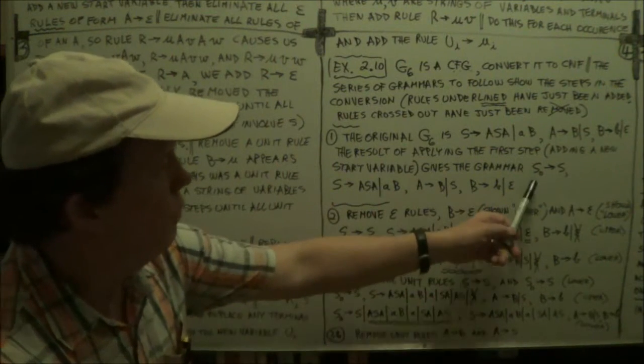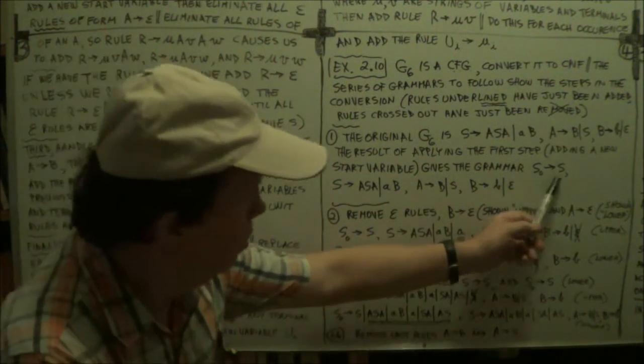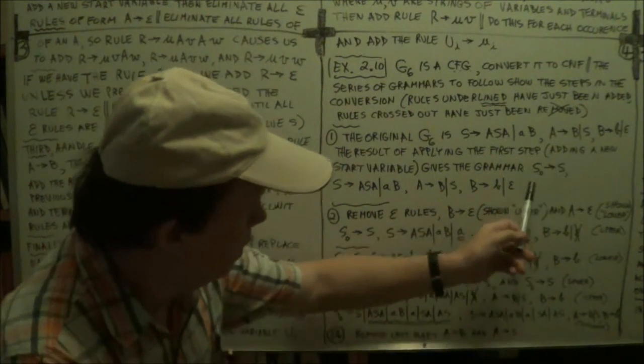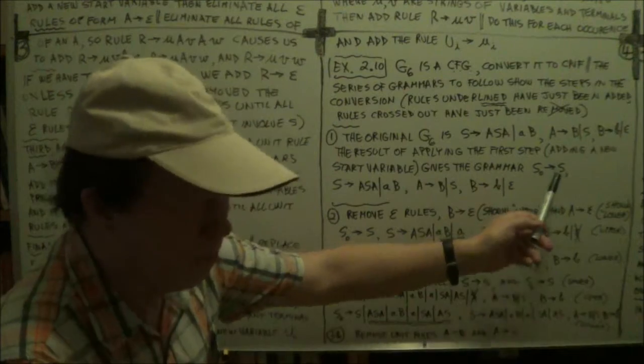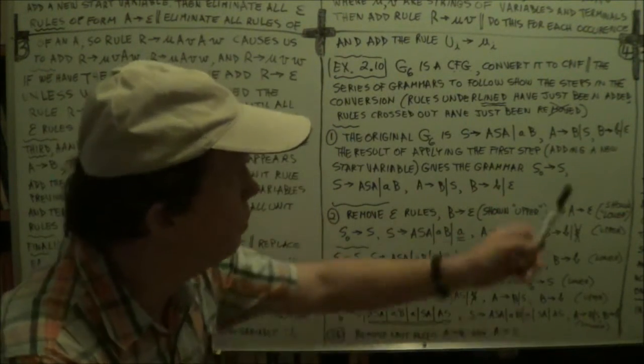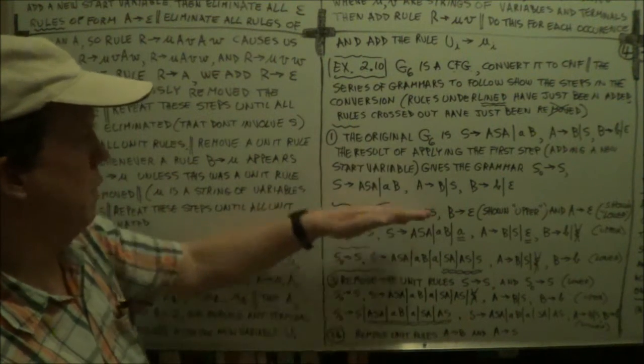Okay. So, step one is, create a new variable, put it in big V, and add a rule. Rule, this rule, new start state arrow old start state, start variable. New start variable arrow old start variable. Okay. So that's step one done.